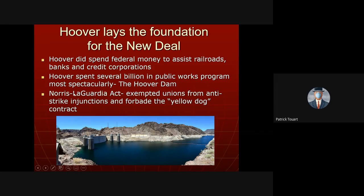A law passed by New Yorker Fiorello LaGuardia said that unions would not be broken up using federal law, and the Yellow Dog Contract — which prohibited union membership — was banned. So unions wouldn't be prosecuted as obstruction of labor. There were some minor pre-New Deal gains by Republican leadership, but it was a little too late and not enough to satisfy American workers.